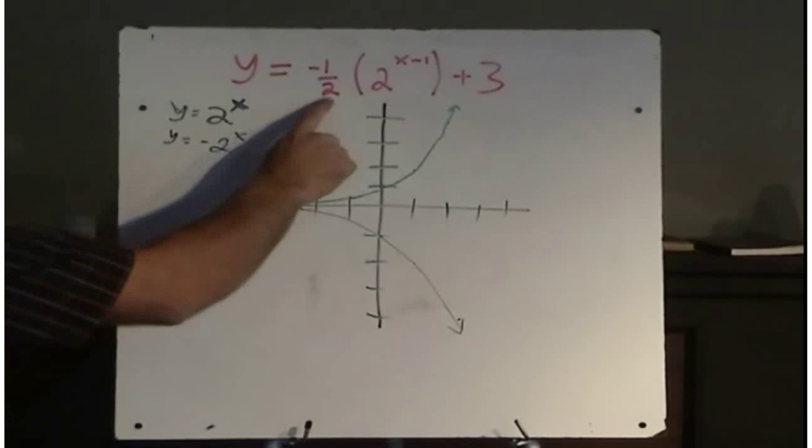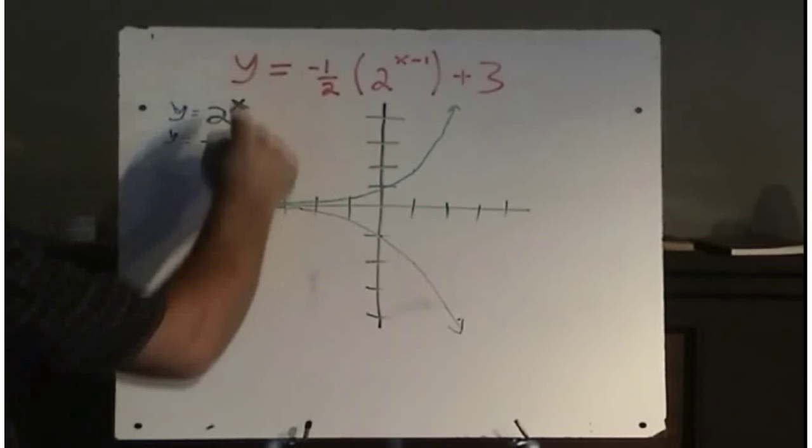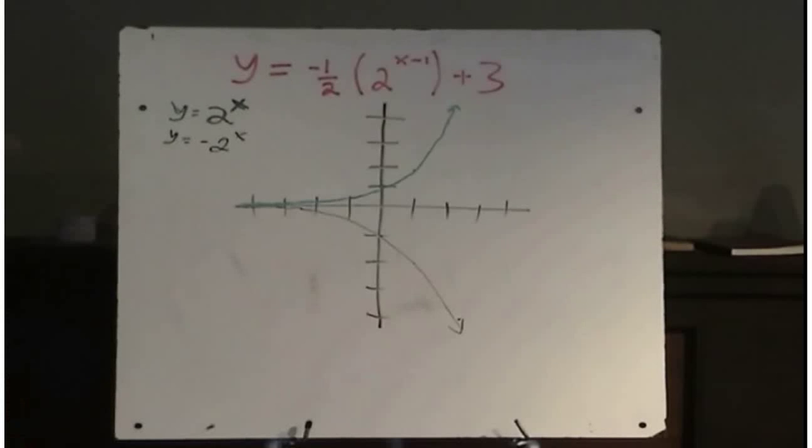Then we have a half, this is like really a 2y, so this is a vertical compression by a half.